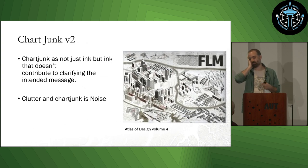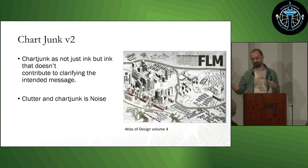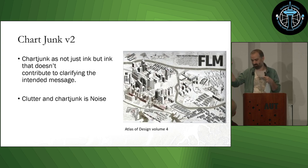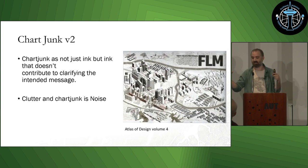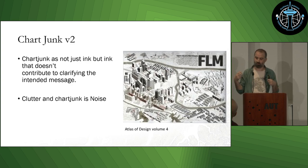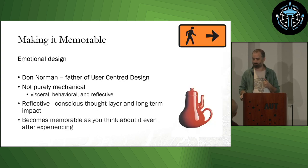This one is from Atlas of Design. It's the idea of chart junk — it's full of dark heavy shadows and 3D buildings getting in the way. It should be a bad map, but it actually creates a whole feeling of oppression, talking about this particular community. So the feeling of the map and the data came through even though it should have been clutter or chart junk.